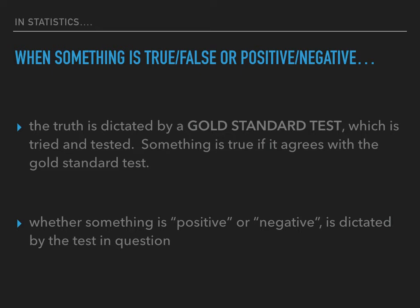Whether something is positive or negative is dictated by the testing question. If you have something that is positive from the testing question but negative from the gold standard, it will be a false positive. And if you have something that's negative from the testing question and positive by the gold standard, it's a false negative.